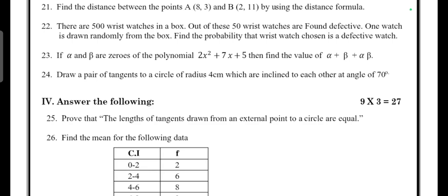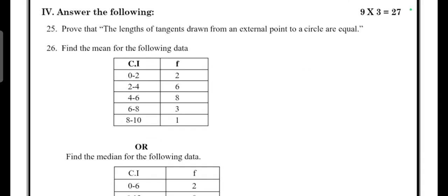Draw a pair of tangents to a circle of radius 4 cm which are inclined to each other at an angle of 70°. Next, three marks questions: nine questions will be there. Prove that the lengths of the tangents drawn from an external point to a circle are equal. Then find the mean or median of the following.